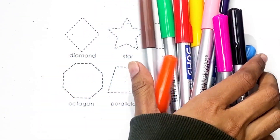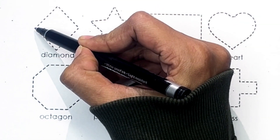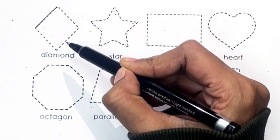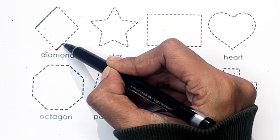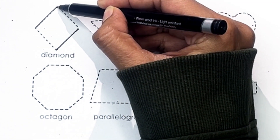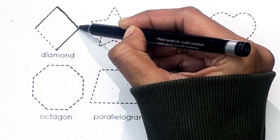Let's learn shapes. A, B, C, D, E, F, G, H, I, J, K, L, M, N, O, P, Q, R, S, T, U, V, W, X, Y, and Z.